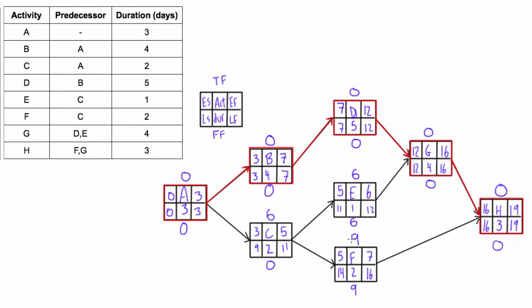Recall the difference between total float and free float. Total float is the amount of time any given activity can be delayed without affecting the end date of the project. For example, anything on the critical path — if you delayed it by even one day, you would extend the entire project duration by one day. Take activity D: if we delayed it so it finished on 13 instead of 12, then G would have to start on 13 and finish on 17, and activity H would start on 17 and end on 20 — increasing the whole project duration by one.